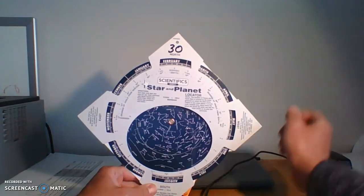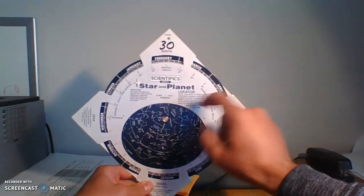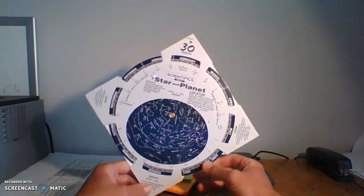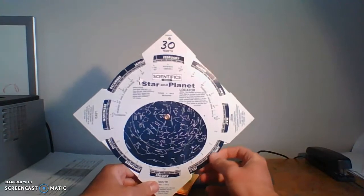Hey everybody, I am going to talk to you about using your star and planet locator. So here's mine. You can see that it is a square. It's kind of really a diamond.